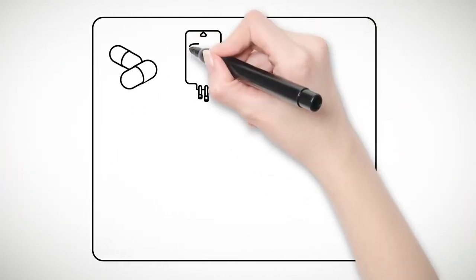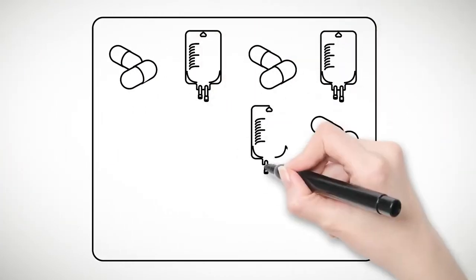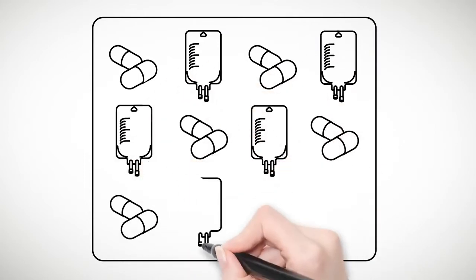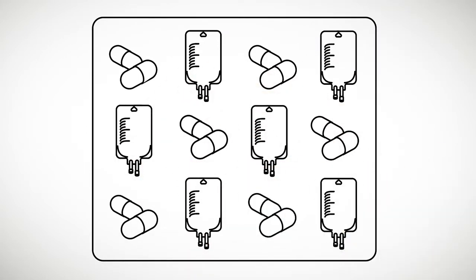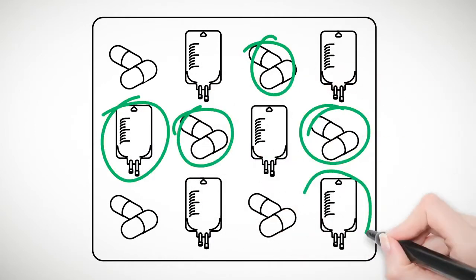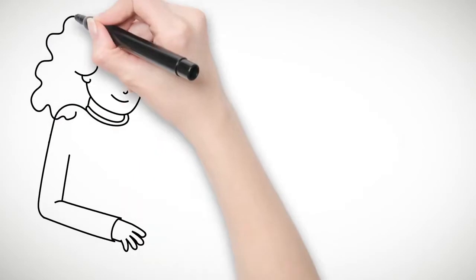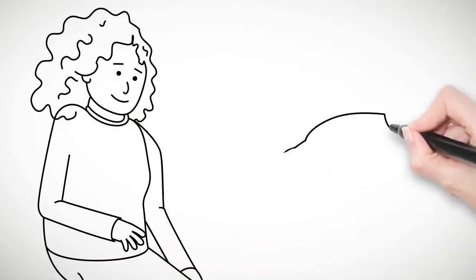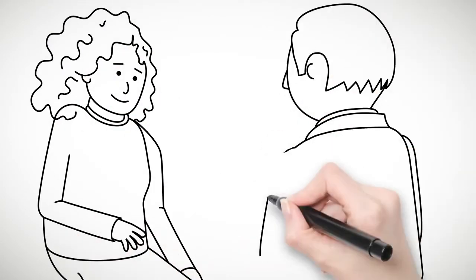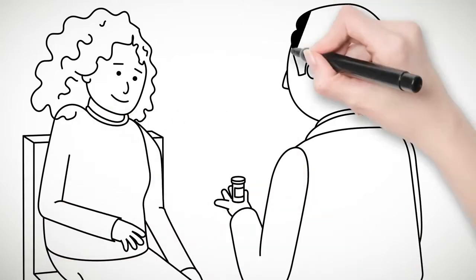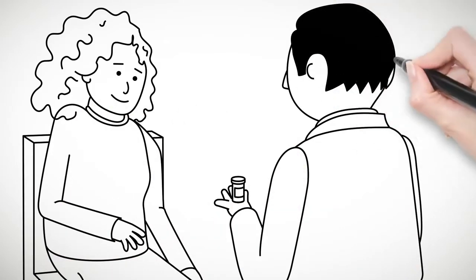In some trials one group of volunteers take the study medicine and another group the placebo. A placebo looks like the study medicine but doesn't have any medicine in it. You and your doctor won't know if you are taking the placebo or the medicine. The assignments are up to chance and kept secret to help researchers learn the effects of the medicine.